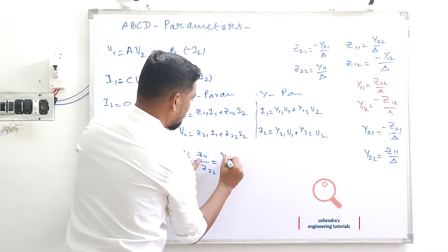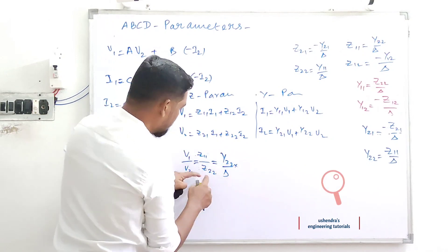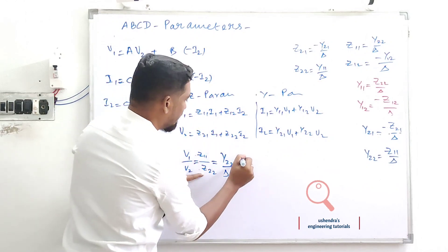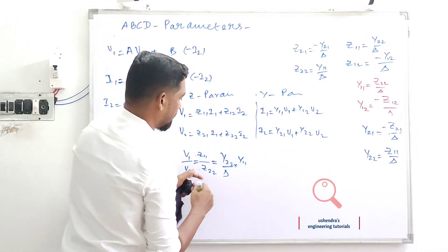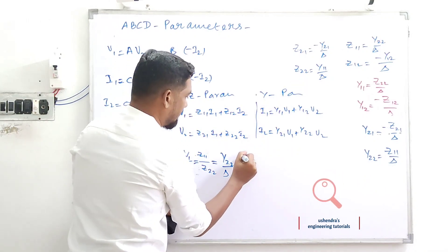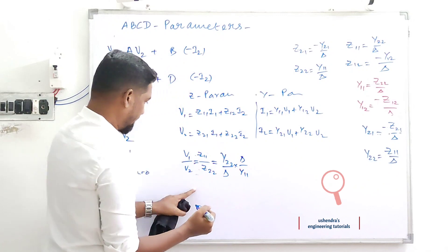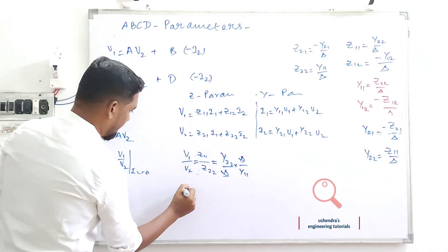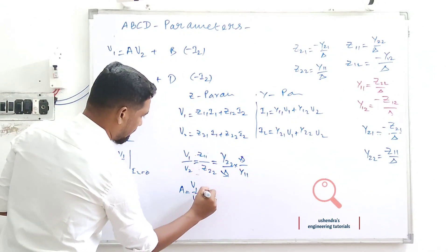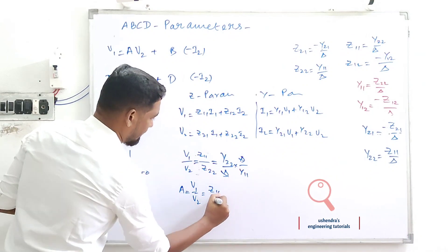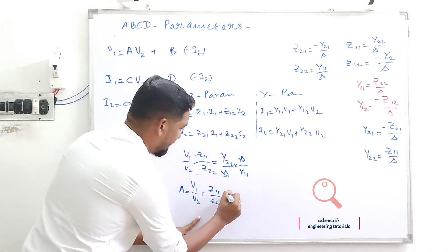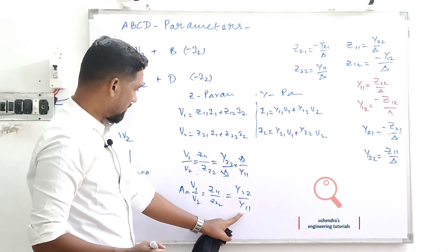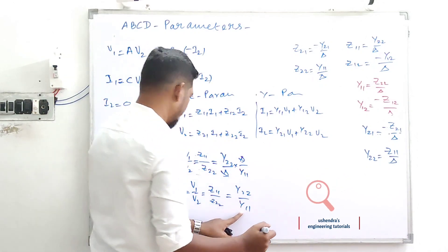So A = V1/V2 = Z11/Z22 in terms of Z parameters. Substituting the Y-parameter expressions for Z11 and Z22 — Z11 = Y22/Δy and Z22 = 1/Y11 (or the corresponding flip) — after simplification, A = Y22/Y11 in terms of Y parameters.